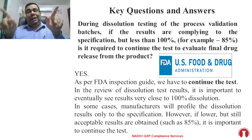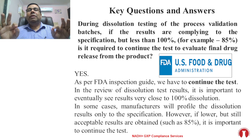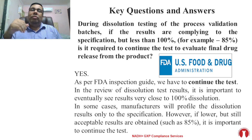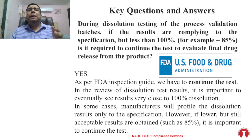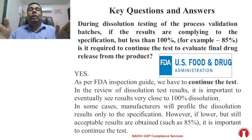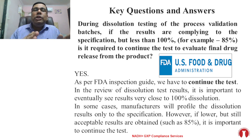Now the next question, which is somewhat tricky. I will say all of the companies I have audited — more than 500 sites — nobody is complying with this, but this is what the FDA expects. The question is: during dissolution testing of process validation batches, if results comply to specification but are less than 100%, is it required to continue the test? The answer is yes. As per the FDA inspection guide, we have to continue the test. It is important to eventually see results very close to 100% dissolution.